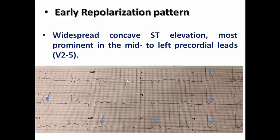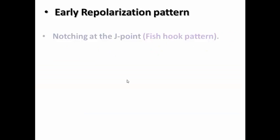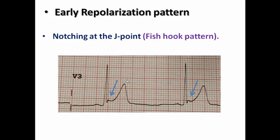In this ECG, we can see widespread ST elevation from V3 to V6, also involving slightly lead II, AVF, and lead I — so the ST elevation extends to inferior and slightly to lateral leads. The second criterion is notching at the J-point, sometimes called the fish-hook pattern in the literature. Here we can see the J-point is notched, not a smooth transition from the QRS complex to the ST segment as seen in STEMI. Whenever you see this characteristic criterion, it helps distinguish early repolarization pattern.